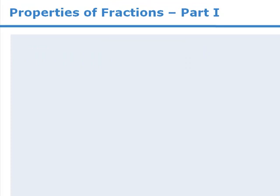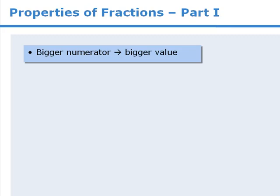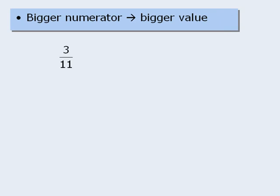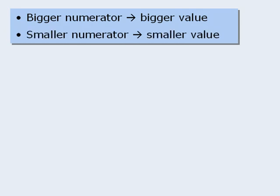Our next property deals with the consequences of increasing and decreasing the numerator and denominator of a fraction. To begin, if we take a fraction and make its numerator bigger, the effect is to increase the value of that fraction. For example, if we take the fraction 3 elevenths and increase the numerator to 4, the value of the fraction increases. In other words, 4 elevenths is greater than 3 elevenths. Conversely, if we take a fraction and make its numerator smaller, the effect is to decrease the value of that fraction.